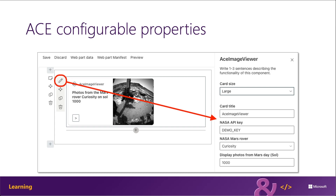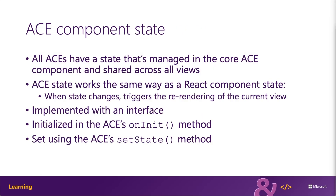Here you can see an example of an adaptive card extension opened in edit mode, with the pencil icon clicked to launch the property pane on the right-hand side, where public properties defined on the adaptive card extension can be modified. If you've built a SharePoint Framework web part using React, you're probably familiar with the concept of component state. ACEs implement the same concept — when the state changes, it triggers the ACE to be re-rendered. The component state is accessible not just in the ACE itself, but in all its views, including both the card view and all quick views.